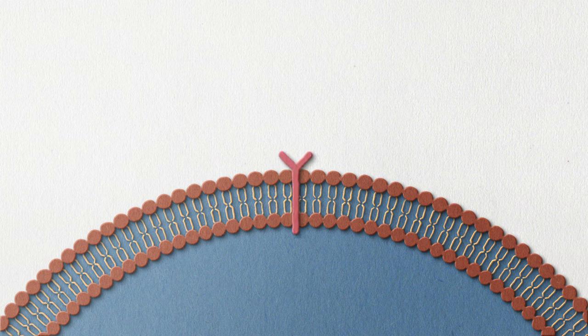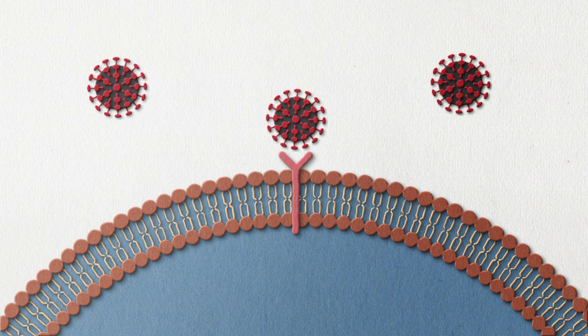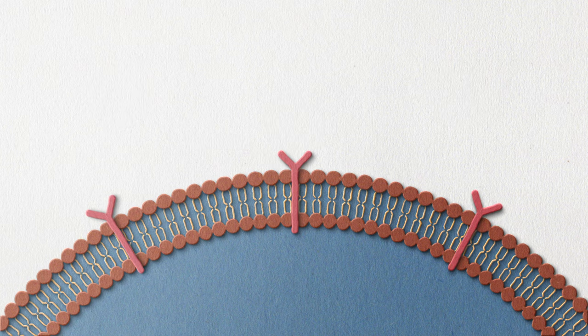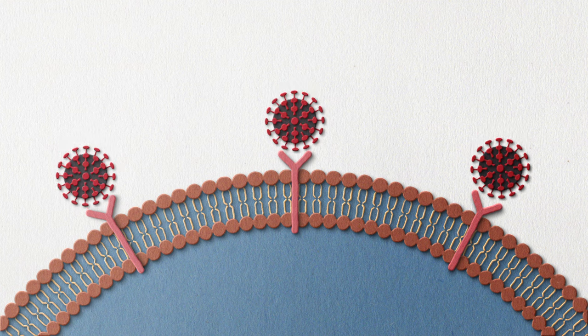For example, the well-known and quite hated COVID-19 attaches to the ACE2 receptor, which is found all over the body. Diabetics have a lot more ACE2 receptors, therefore have a much higher chance of getting COVID-19 in their cells.